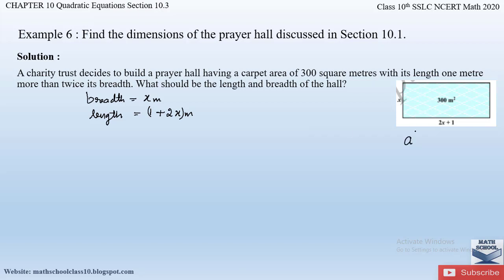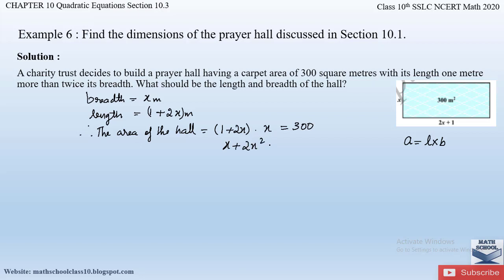This is a rectangular area. Area of rectangle = length × breadth, so (1 + 2x) × x = 300. Expanding: x + 2x² = 300. Arranging in descending order of power and moving 300 to the left: 2x² + x - 300 = 0. We got a quadratic equation, and by finding its roots we will get the values of length and breadth.